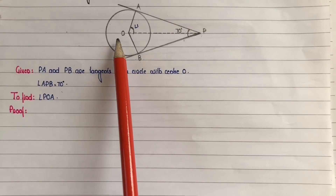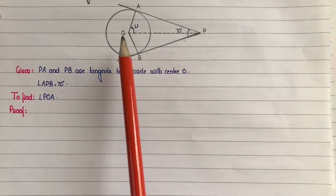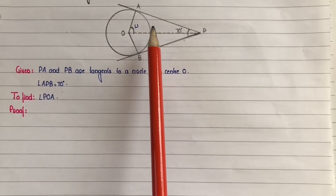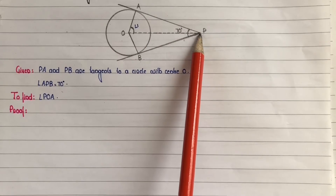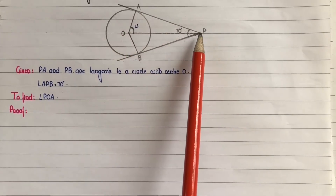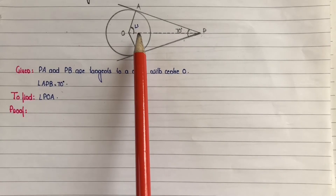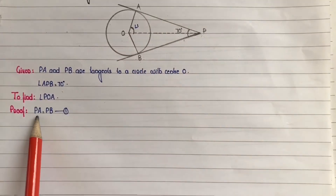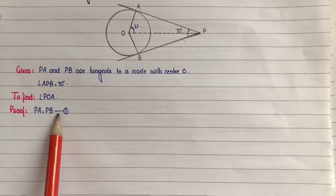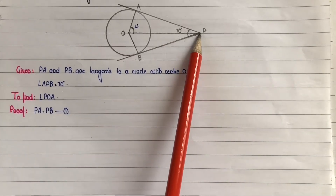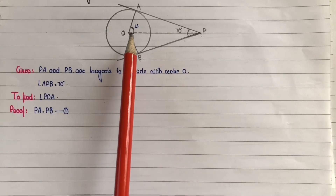This is a circle and tangent problem, and we have two theorems to apply. P is an external point, and PA and PB are two tangents drawn from point P to the same circle. By theorem, their lengths are equal — that is, PA is equal to PB. Reason: the lengths of tangents drawn from an external point to a circle are equal.